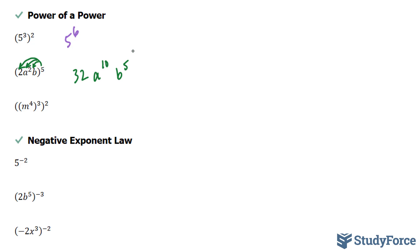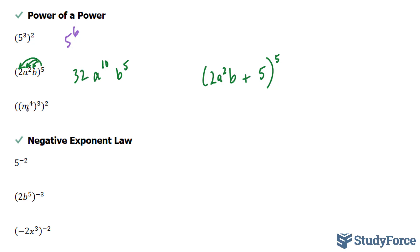This distribution would not work if there were another term added to the expression inside the brackets — for example, if the other term were 5. You cannot distribute the exponent to individual components if what's inside the brackets is not a single term. In our final example, m to the power of 4 to the power of 3 to the power of 2 uses the power of a power rule: we multiply 4 times 3 times 2, which is 24.